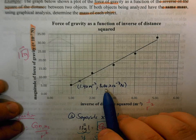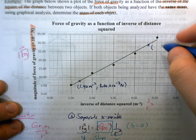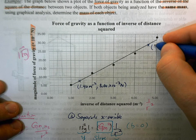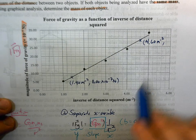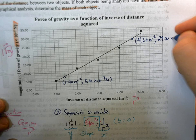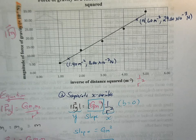So I got that point and then this point up here, this looks pretty easily identifiable too. So I will call that the point, we'll call this 4.60 meters to the minus 2. And then this data point is 29 times 10 to the minus 7 newtons. So I have two data points.